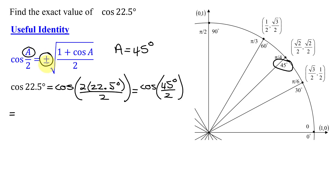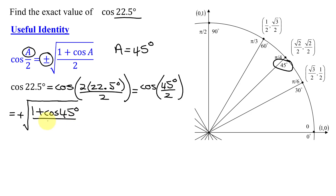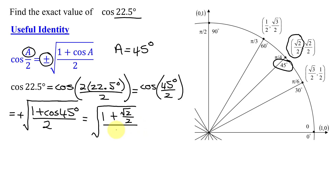Now I have to decide, do I pick the plus or the minus? 22.5 degrees is over here in quadrant 1. All trig functions are positive in quadrant 1. So I need the positive square root of 1 plus the cosine of a — that's the cosine of 45 degrees — all underneath the radical, all divided by 2. What's the cosine of 45 degrees? It's the x-coordinate at this point, so it is the square root of 2 over 2.